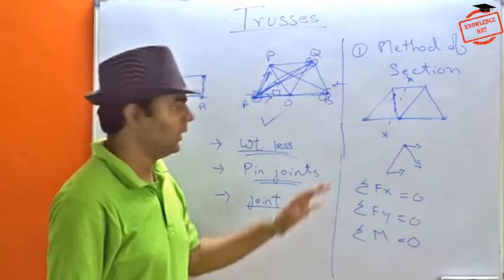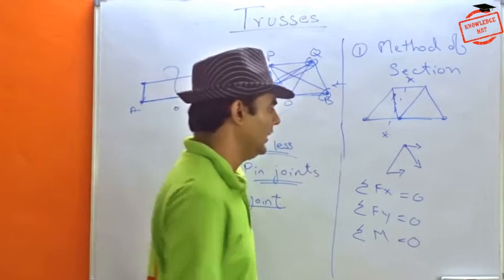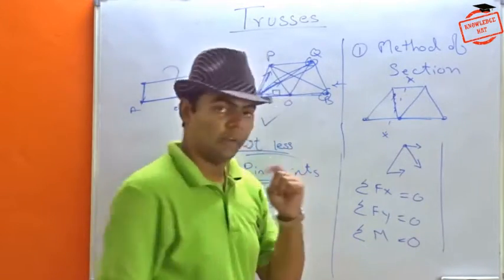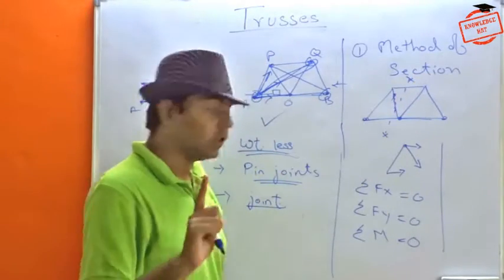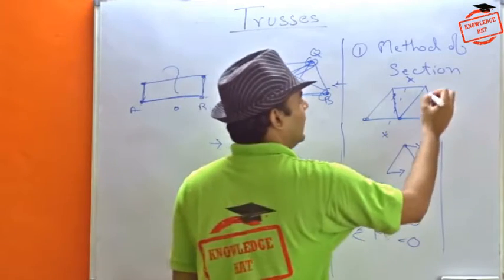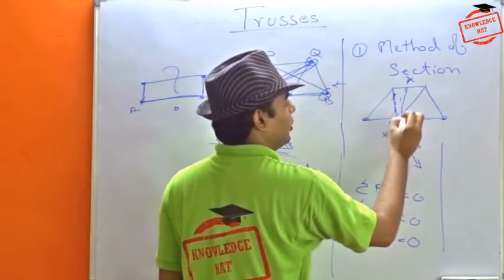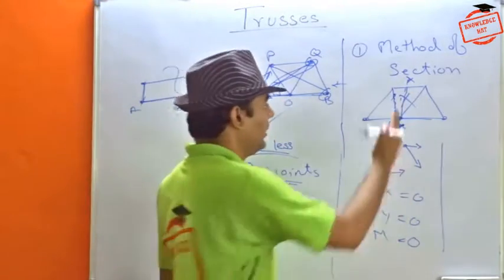But while doing this section, we need to keep in mind that we don't, a very important point is, we cut only through the members and not through the joint. We cannot cut it like this, exactly at this joint. No. This is not allowed.